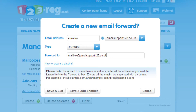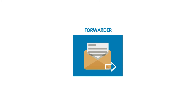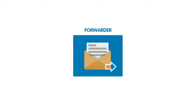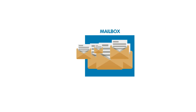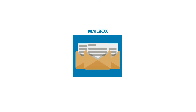Once you've done this, click Save and Exit, unless you wish to add another email forwarder. That's it — your email forwarder is set up. So any time an email is sent to this address, it will send the emails to the mailbox or mailboxes that you have instructed them to be forwarded to.